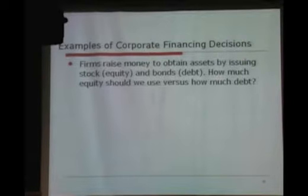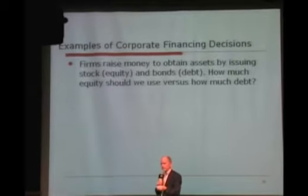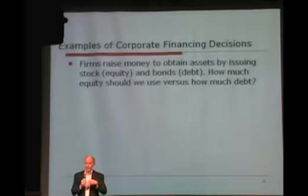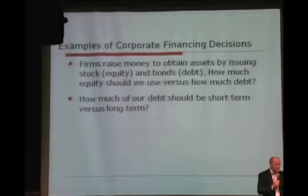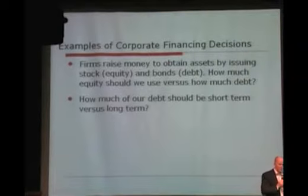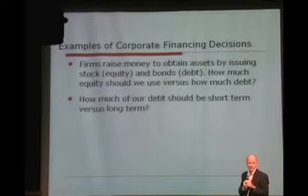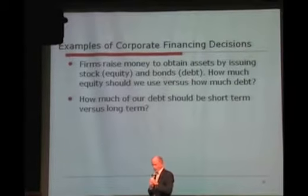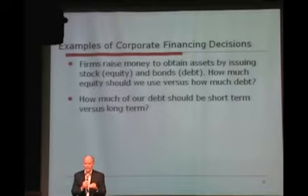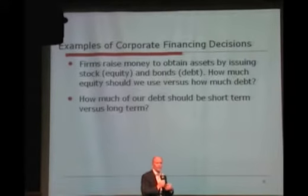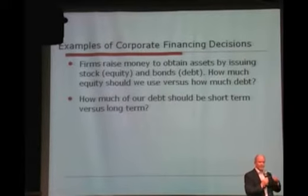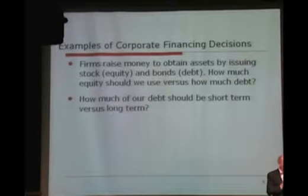Firms raise money to obtain assets by issuing stock — that is, equity — and bonds, or debt. Investment bankers stand as intermediaries between corporations and investors and assist them in issuing both stocks and bonds. We have to decide how much debt versus how much equity. Debt is cheaper to a company than equity, so you might ask, why not always issue debt? The problem is that debt makes a company riskier through something called leverage. As debt makes the company riskier, both the debt and the equity become more expensive. So there's a trade-off: you want to use that cheap debt, but if you use too much, you make your cost of financing too expensive.